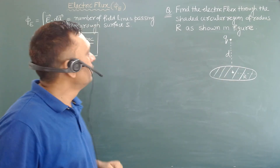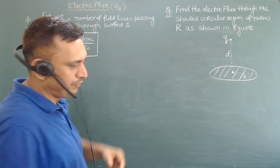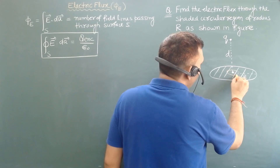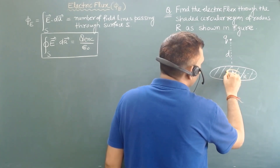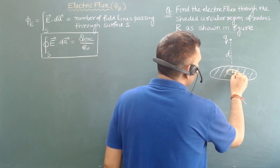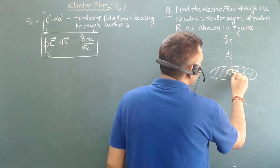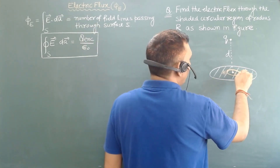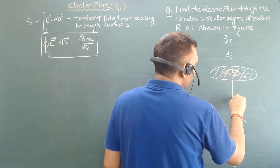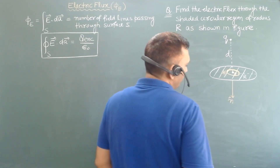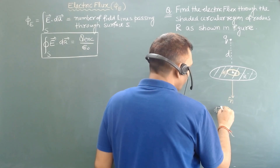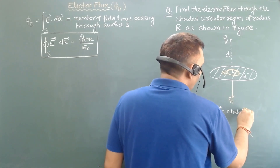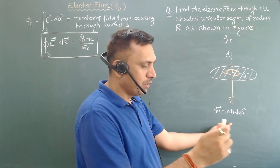In this question, an open surface is given and we have to find the flux through that open surface. So we will directly find E dot dA on this surface. Let us consider an elemental circular ring of radius small r and width dr. The unit normal n-hat is perpendicular to the surface, so dA over this surface we can write as r dr dφ n-hat, using cylindrical symmetry, where φ varies from 0 to 2π.